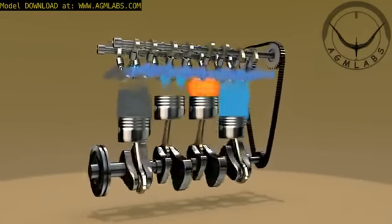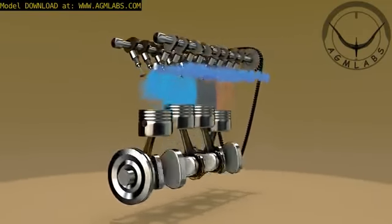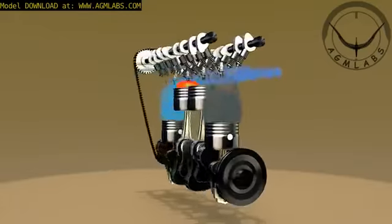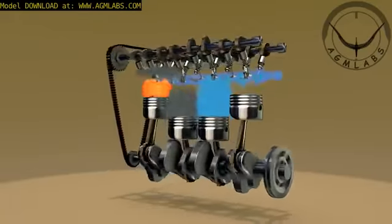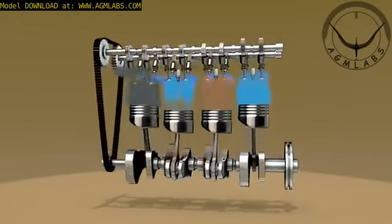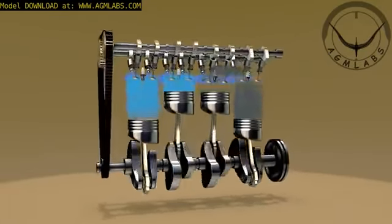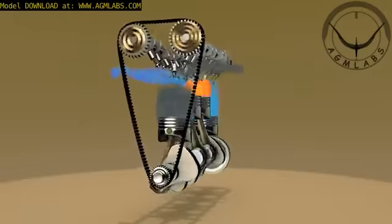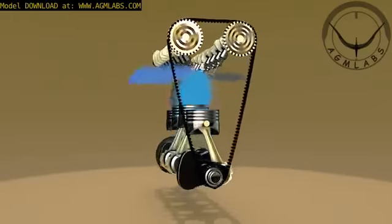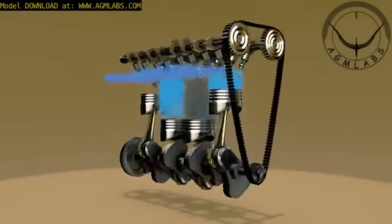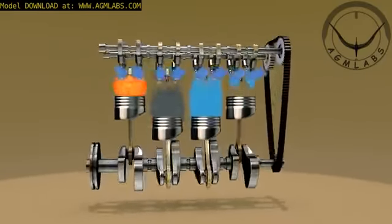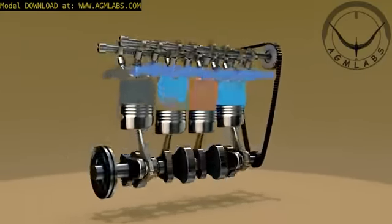A four-stroke engine is an internal combustion engine in which the piston completes four separate strokes — intake, compression, power, and exhaust — during two separate revolutions of the engine's crankshaft, and one single thermodynamic cycle.